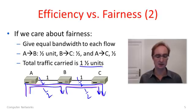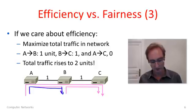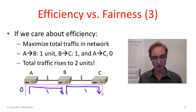What if we care about efficiency? We would want to maximize the total amount of traffic that can go through the network. I can see that we can increase the traffic going through the network by simply assigning one whole unit to A-B, one whole unit to B-C, and nothing, zero, to A-C. In this way, we are able to grow the total amount of traffic through the network to be two units. That's bigger than one and a half, so we're operating the network more efficiently.